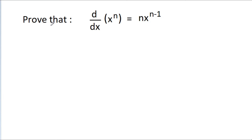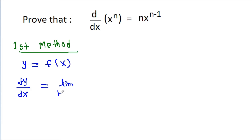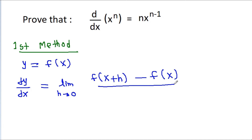In this video we will prove that the derivative of x to the power n is equal to n times x to the power n minus 1 by two different methods. The first method uses the definition: for y equal to f(x), dy by dx is equal to the limit as h tends to 0 of f(x+h) minus f(x) by h.